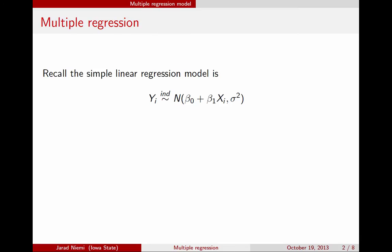Just as a reminder, our simple linear regression model has a response variable for observation i that's assumed to be independent and normally distributed. The mean of that observation is beta0 plus beta1 times the explanatory variable for that observation, and the variance around this mean is constant at sigma squared. This model is called a simple linear regression model because we only have one explanatory variable.